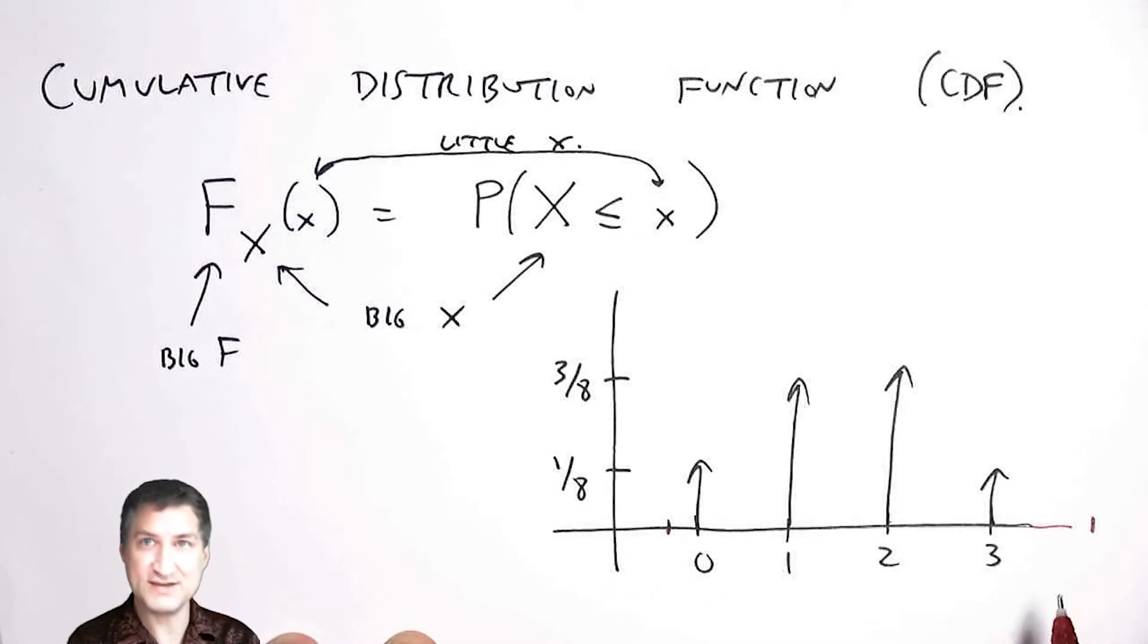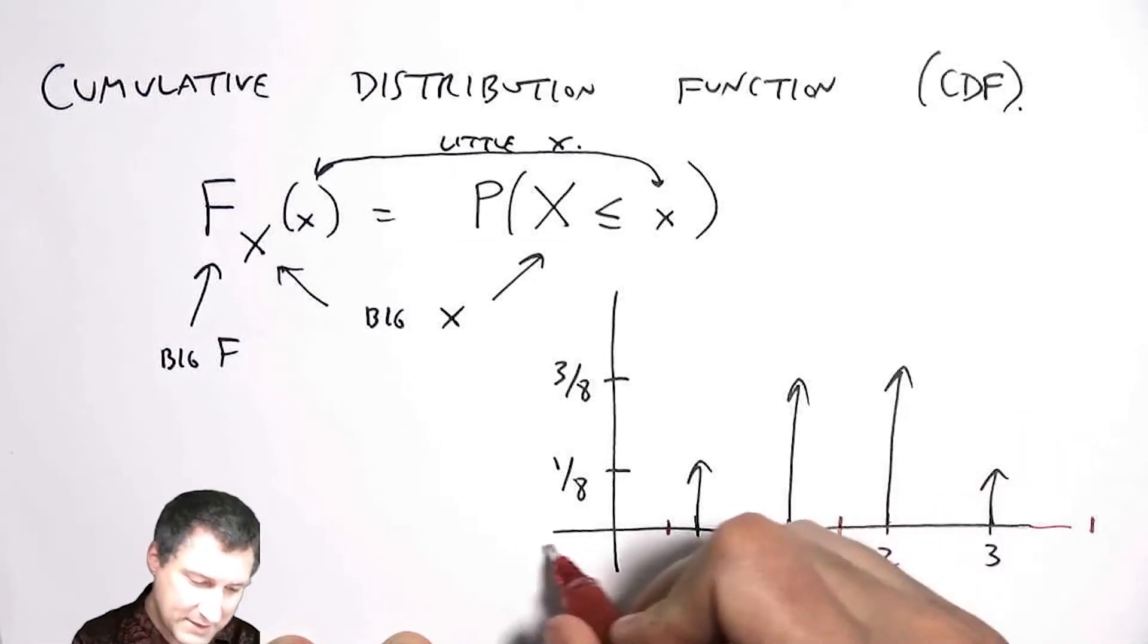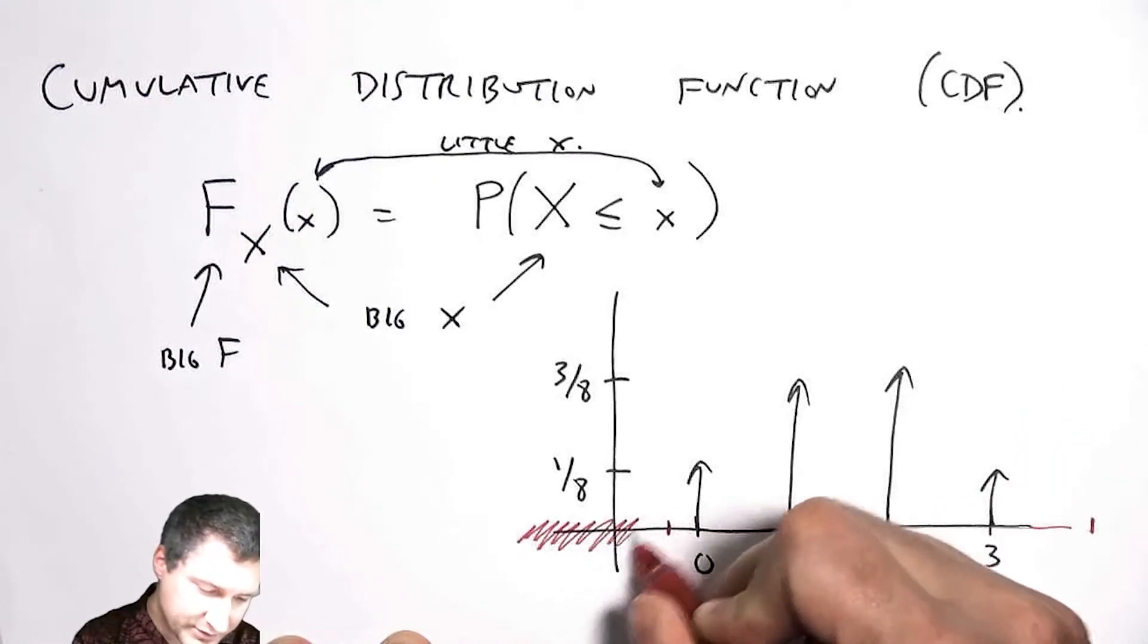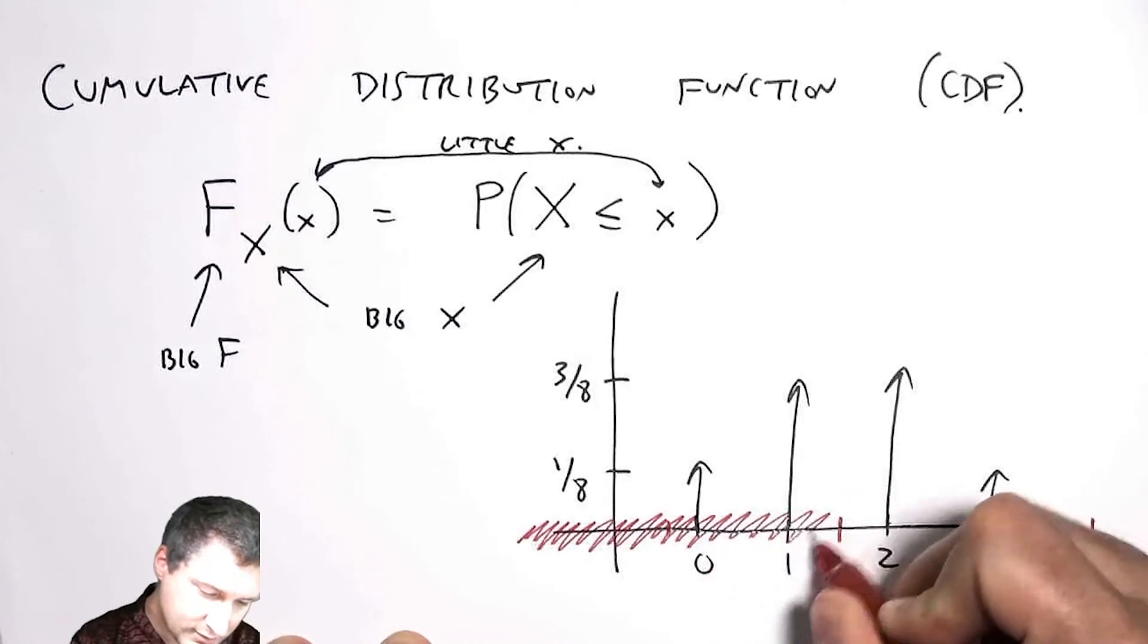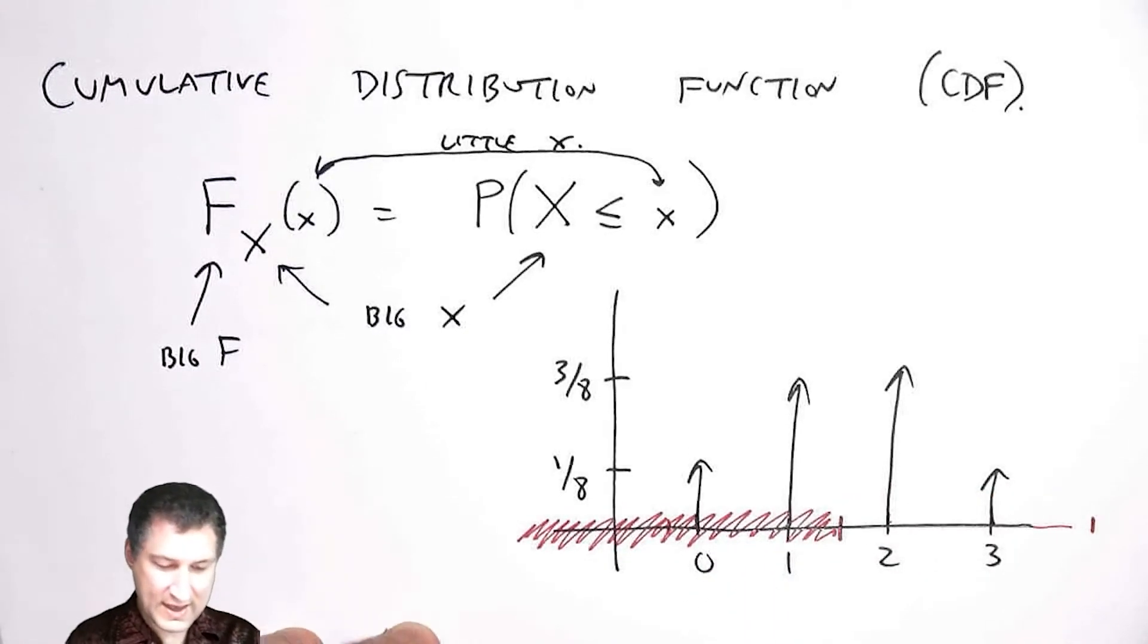So at some point the CDF has to top out at one, and somewhere in the middle it's like I'm adding up all of the probability up to that point.